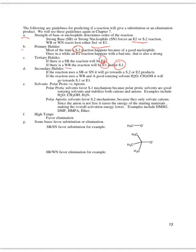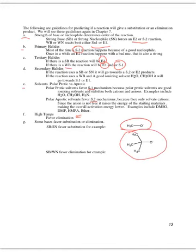Secondary halides can be SN2, E2, SN1, or E1 depending on conditions — you have to be careful. A strong base and strong nucleophile gives a bimolecular mechanism; weak base and weak nucleophile gives a unimolecular mechanism. Polar protic solvents favor SN1; polar aprotic favor SN2. High temperatures favor elimination. Small bases like methoxide favor substitution, while bulky bases like t-butoxide favor elimination.